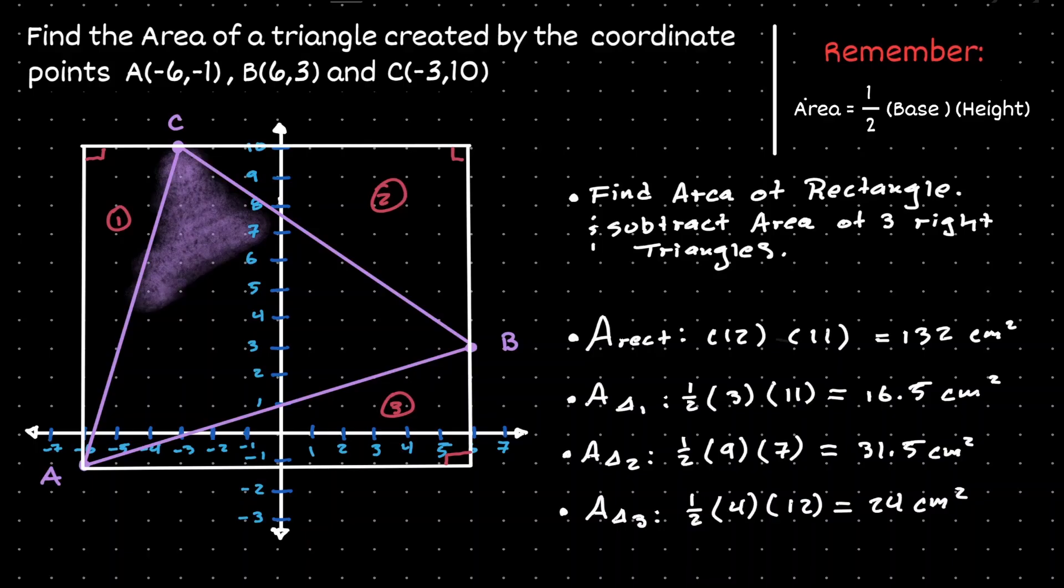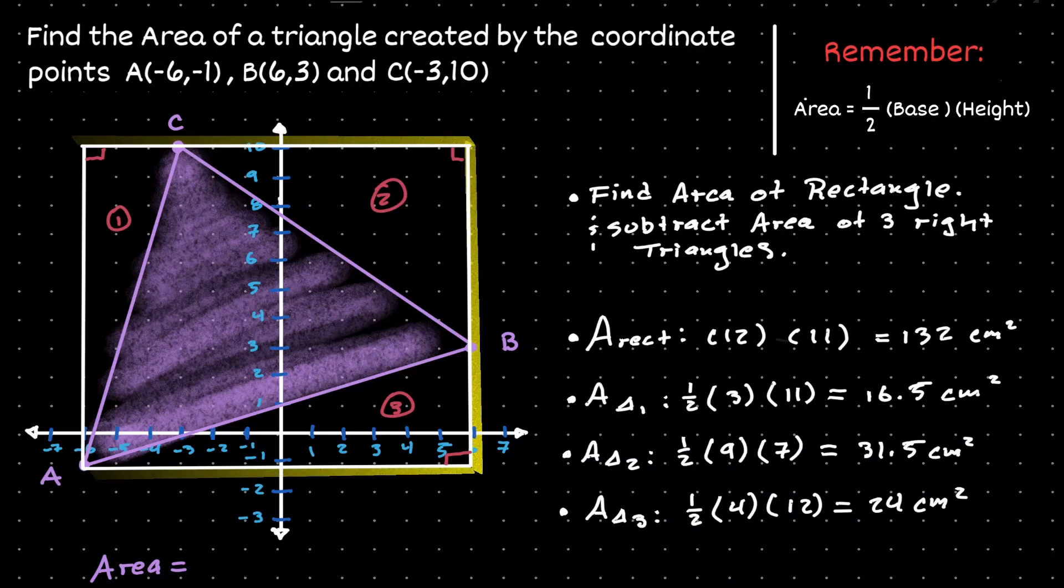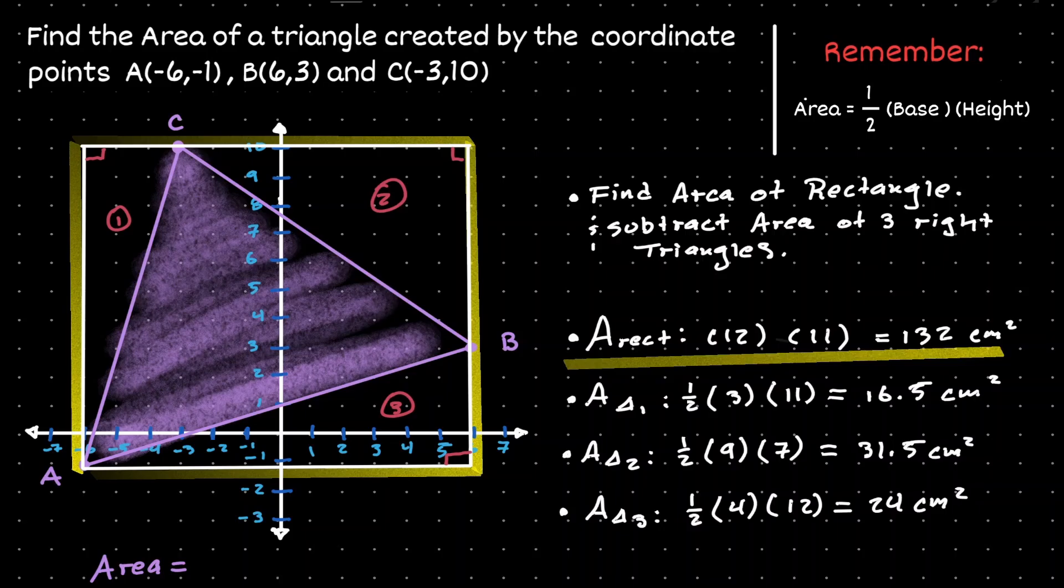So now we have all the information that is needed to find the area of the triangle that we were interested in. Because if we take the area of the whole square, which we found it to be 132.